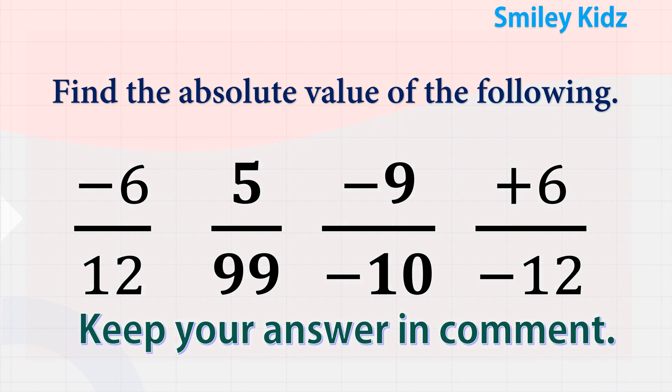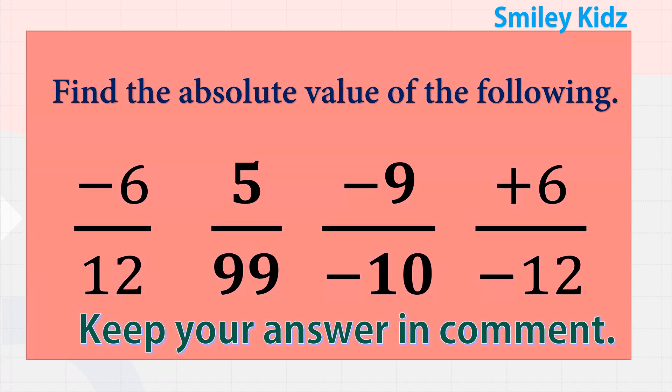Find the absolute value of the following numbers: minus six by twelve, five by ninety-nine, minus nine by minus ten, and plus six by minus twelve. You need to solve the absolute values of these numbers and let me know your answers in the comment section.